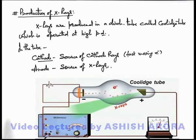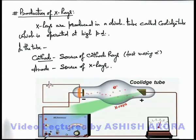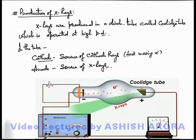From the coming sections we are going to discuss about the production mechanism — that how these high kinetic energy electrons can produce X-rays when they collide with the anode.